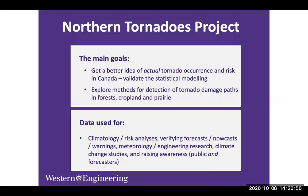So we formed something called the Northern Tornadoes Project. Canada is a northern climate, so you don't tend to think of it as tornado-prone, but we do have our share of them. The idea of this project was to get the true tornado occurrence for Canada to validate the statistical modeling. We also wanted to explore methods for improved detection of tornado damage paths in forests, croplands, and prairies, and to improve the method for intensity estimates in these sparsely populated areas.